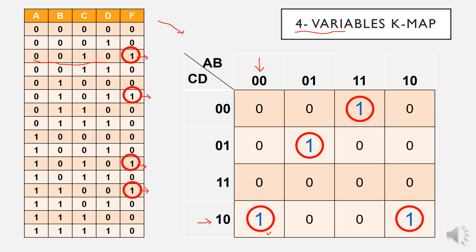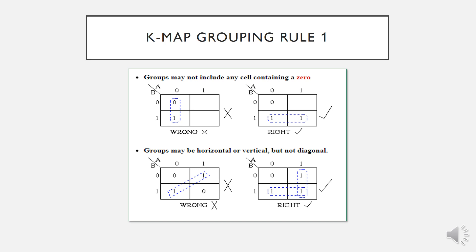Now let's learn how to group cells using K-map rules. The first rule is: we cannot group a one with a zero cell — that is wrong. We can only group ones with other ones. The second rule is: a group may be horizontal or vertical, but not diagonal. Diagonal grouping is not allowed.